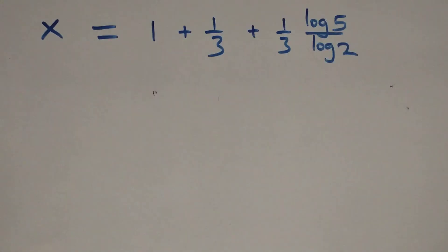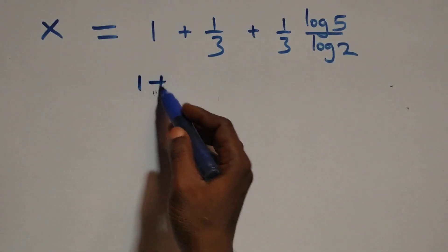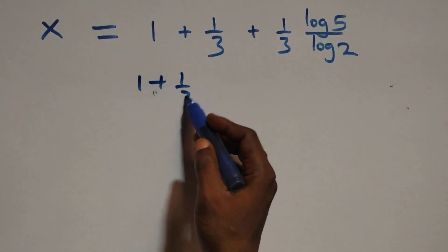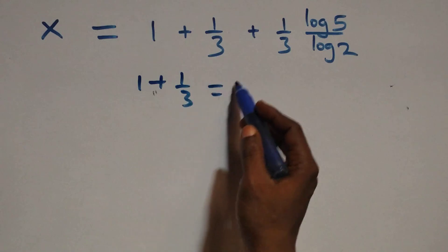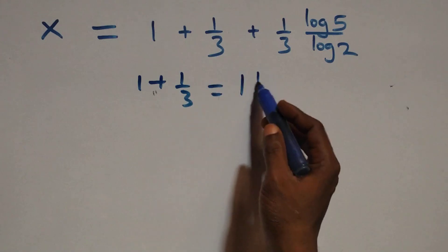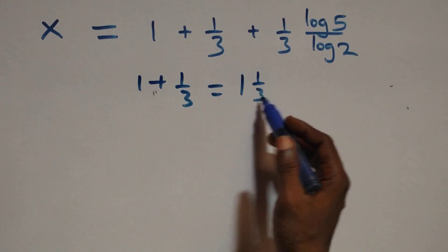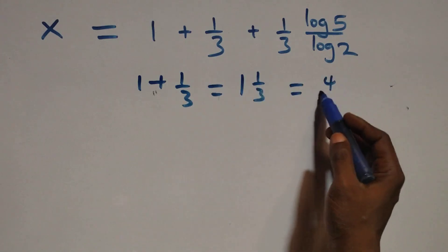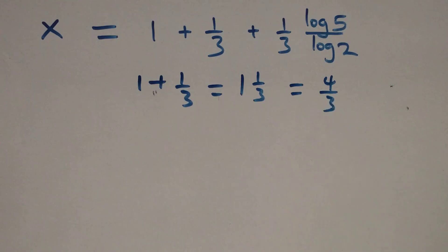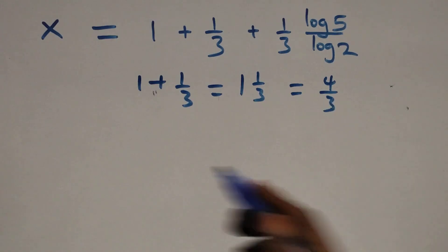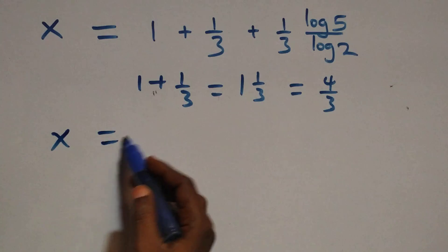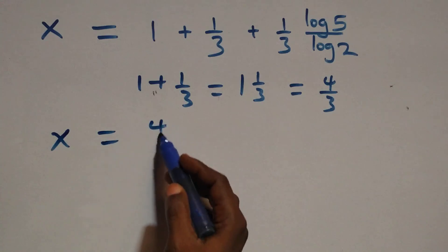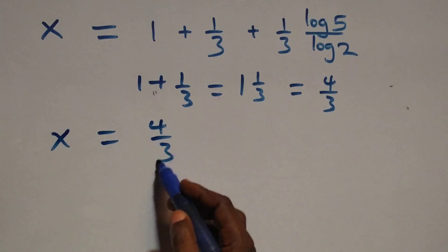Next step here: 1 plus 1 over 3 is the same thing as 4 over 3.